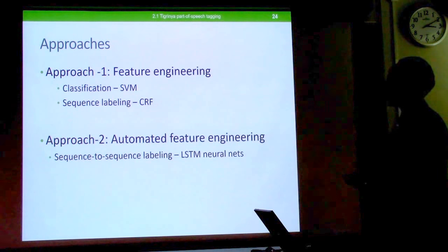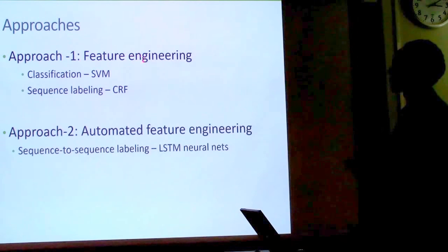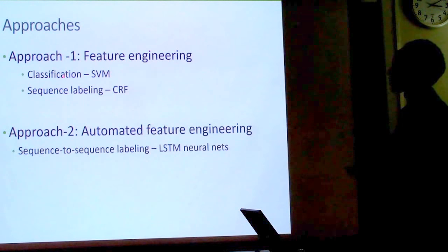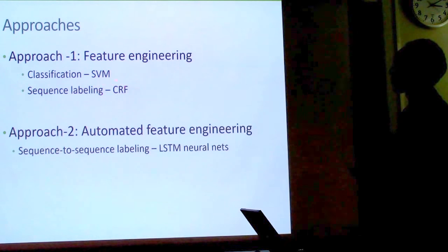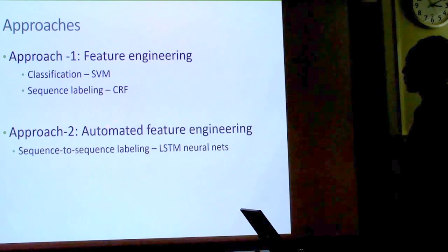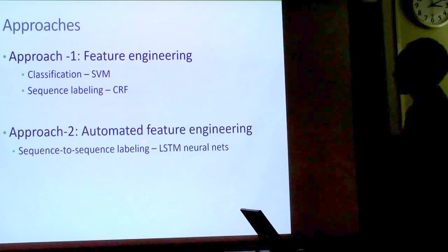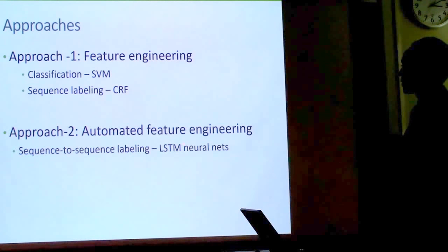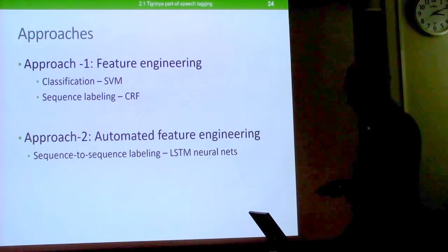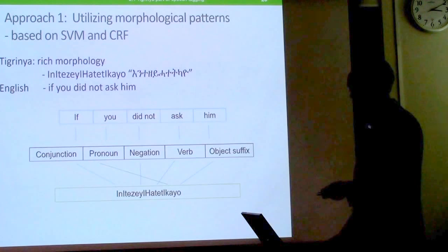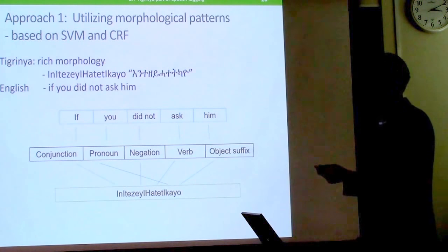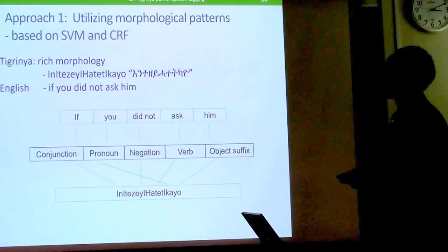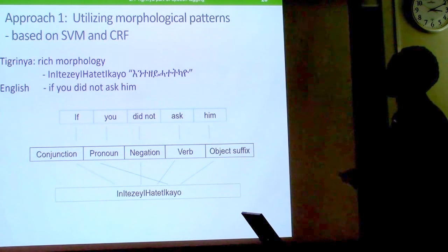We followed two approaches: one based on manual feature engineering using classification with SVMs and sequence labeling with CRFs, and a second based on automatic feature engineering or word embeddings using sequence-to-sequence labeling with LSTM networks for POS tagging.